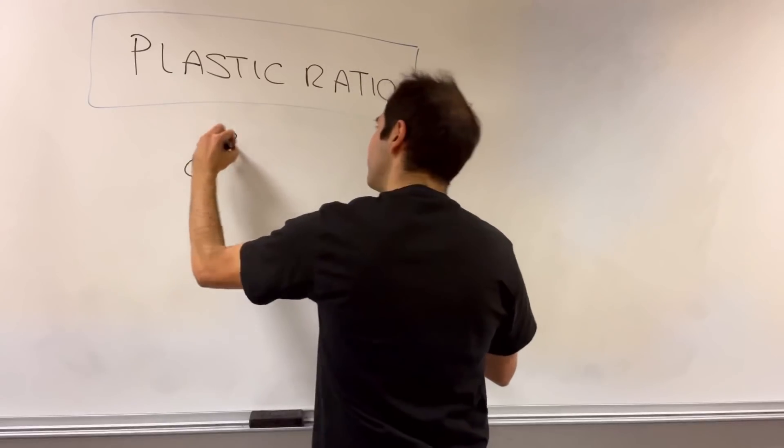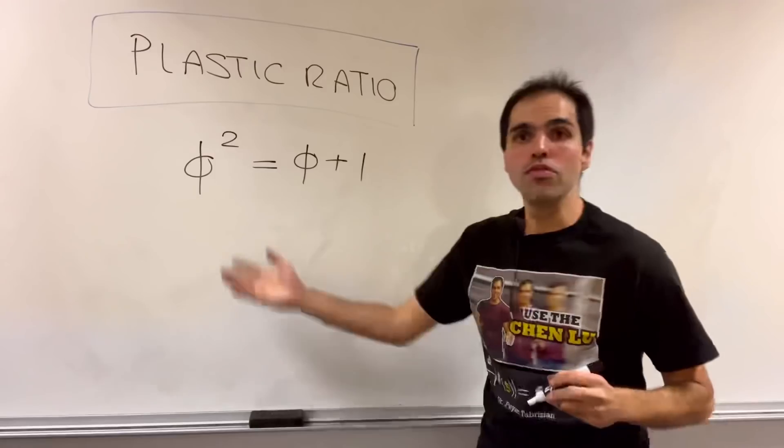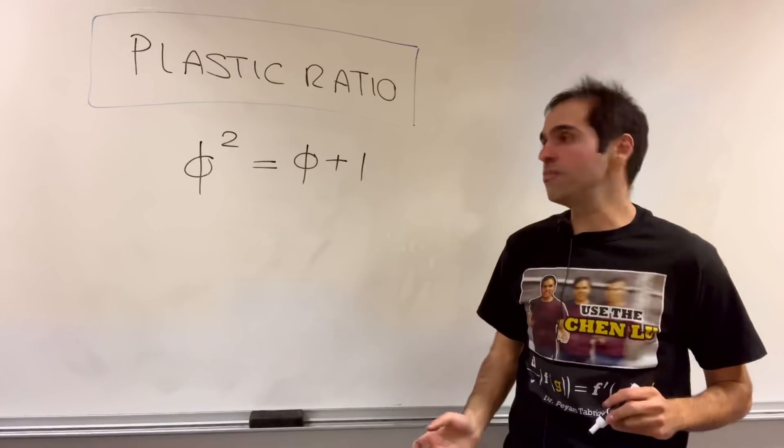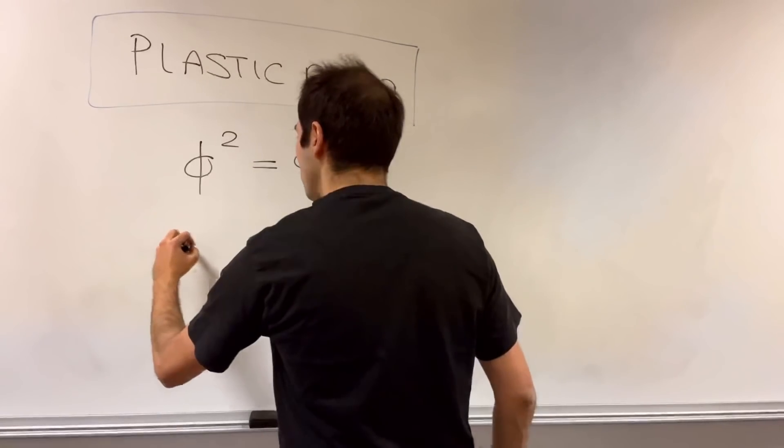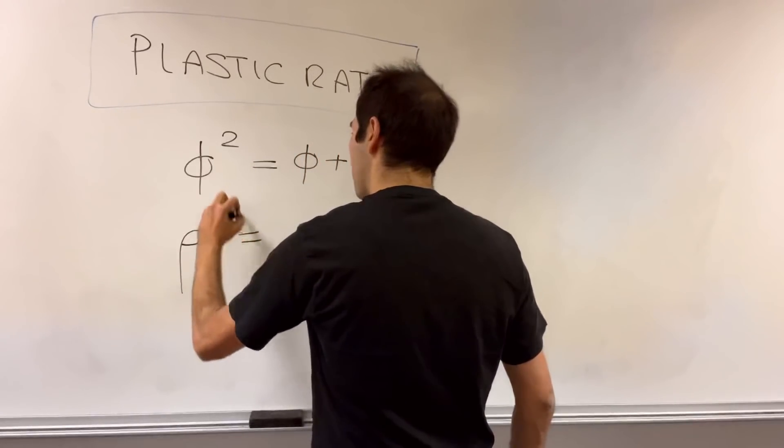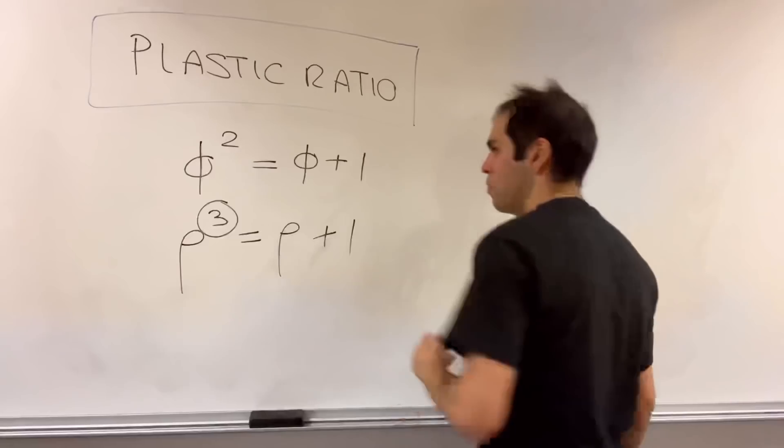Okay, and what it is, it's just a generalization of the golden ratio, which is the positive root of phi squared equals phi plus one. For the plastic ratio, you replace the two by a three. So it's just a positive root of rho cubed equals rho plus one.